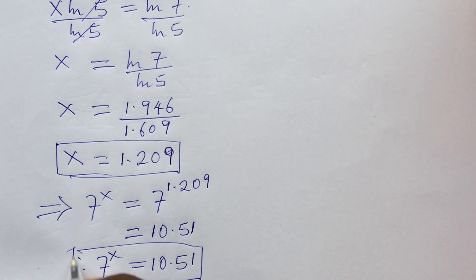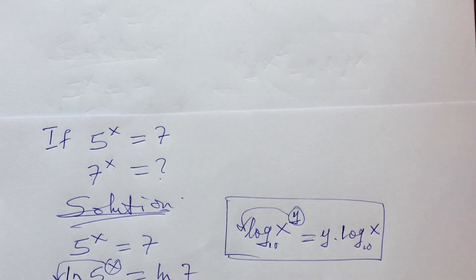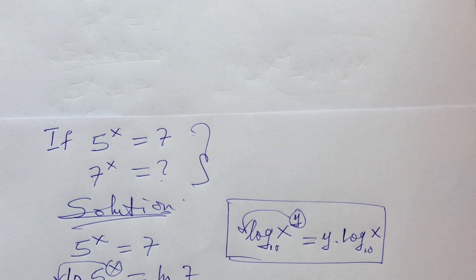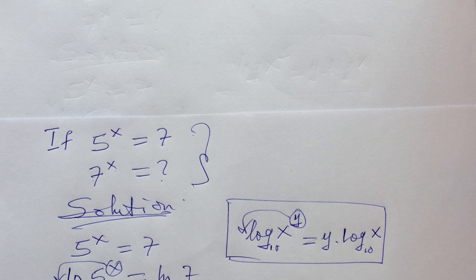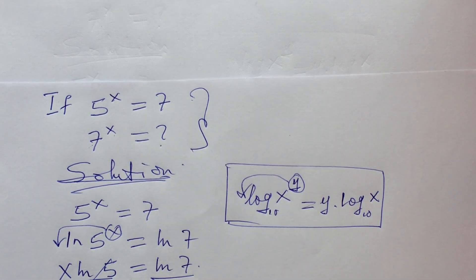Therefore, 7 to the power of x is approximately equal to 10.51. That is the answer to our simple algebraic expression. If you found this helpful, give the video a thumbs up, or if you have a better way of solving it, drop it in the comments. This is Online Maths TV, my name is Jigs and Emma, and we love you. Bye for now.